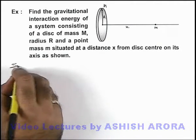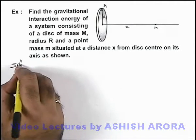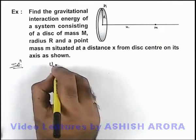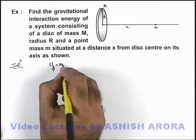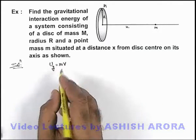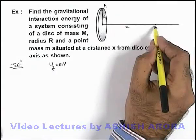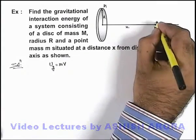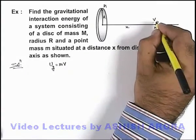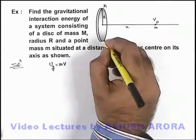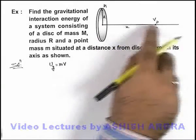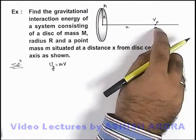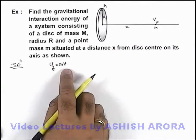In this situation we can directly write that gravitational potential energy is m times V, where m is the mass of this body and V is the potential at point P due to the disc. If V is the potential due to the disc, we can directly write energy as mV.